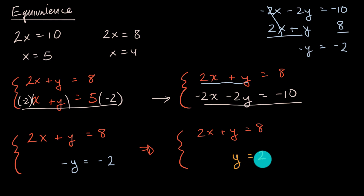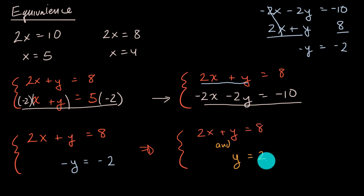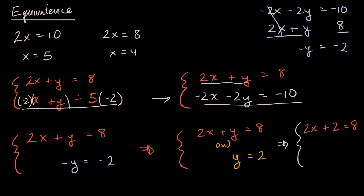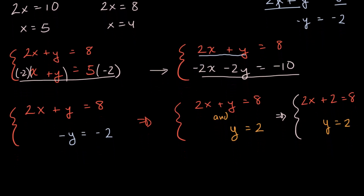If we know y equals 2, and that's true in both equations — remember, it's an 'and' here, we're assuming some x, y pair satisfies both — then up in the first equation where we see a y, we can write an equivalent system substituting 2 for y. We rewrite the top equation as 2x plus 2 equals 8, and the second equation remains y equals 2.